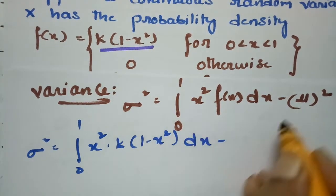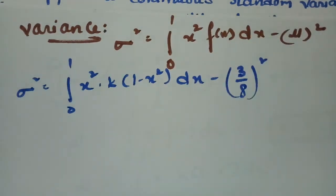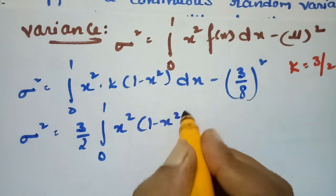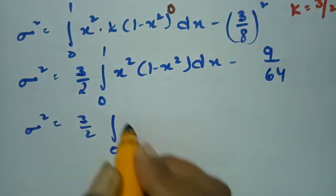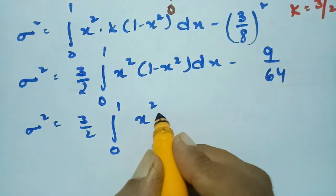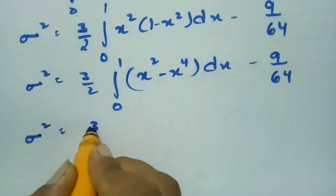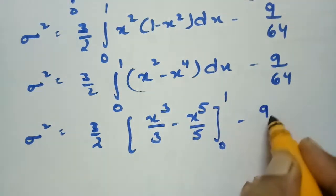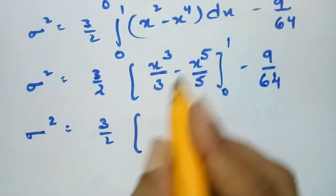Substituting k = 3/2 and μ squared = 9/64, σ² equals 3/2 times the integral from 0 to 1 of (x squared minus x to the power 4) dx minus 9/64. Integrating gives 3/2 times [x cubed over 3 minus x to the power 5 over 5] evaluated from 0 to 1, minus 9/64.